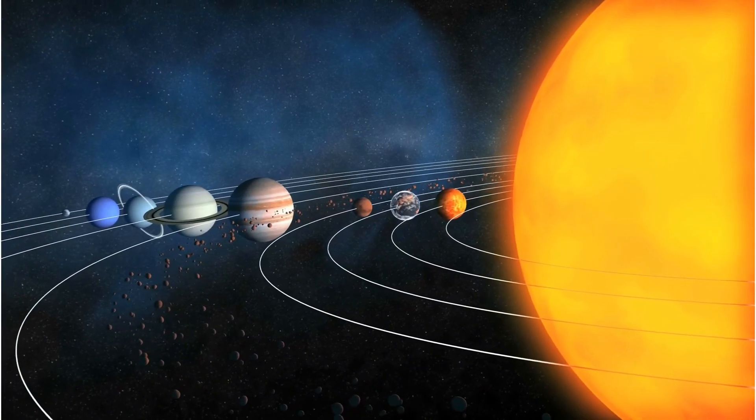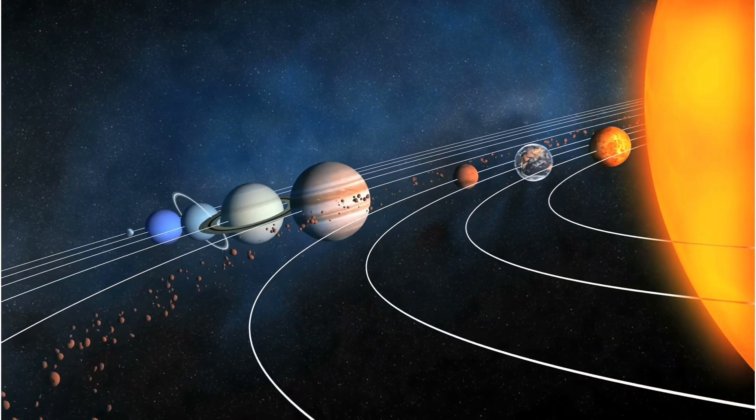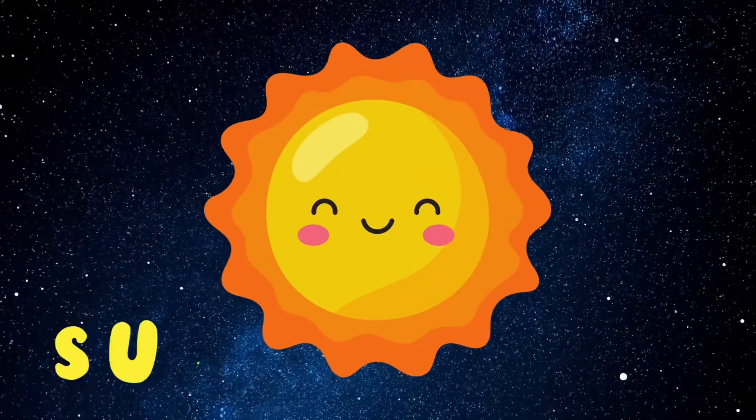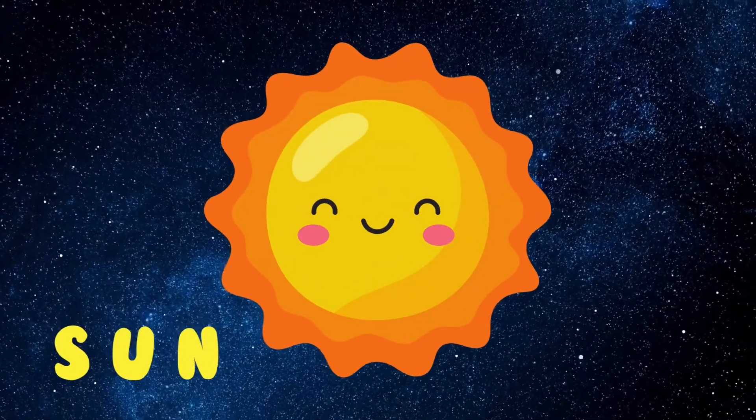These are the planets of our solar system. They all spin around the Sun. The Sun is very, very hot and made of gas.